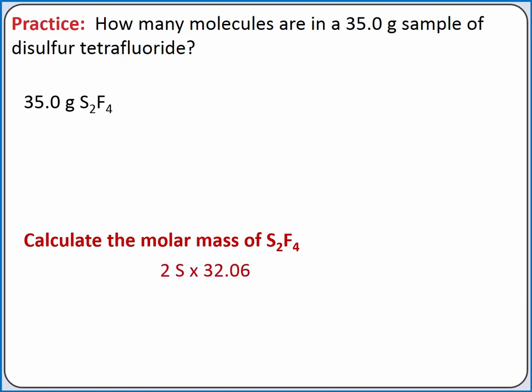we'll add together 2 moles of sulfur times its mass of 32.06 grams per mole, plus 4 moles of fluorine times its mass of 19 grams per mole. So 1 mole of S2F4 has a mass of 140.12 grams.